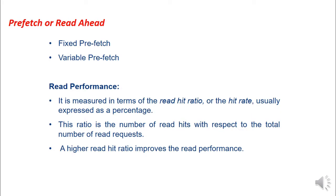To improve read performance, there are two prefetch or read-ahead techniques. The first is called fixed prefetch, where a fixed block of frequently accessed data is fetched from the hard disk drive and stored into cache memory. The second is variable prefetch. Read performance is measured by the read hit ratio or hit rate, expressed as a percentage — the ratio of read hits to total read requests. A higher read hit ratio improves read performance.